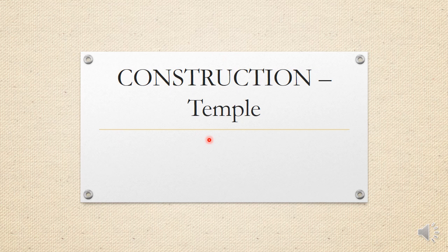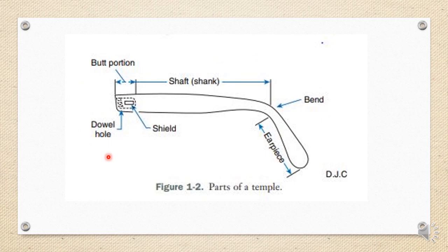Now let's cover temple construction types. The temple has a double hole where the screw attaches with the barrel holes of the frame front. The metallic shield or pin is attached to the temple to hold it in place. The complete area is called the butt portion; the length from the butt portion to the bend is the shaft; and from the bend to the end is the earpiece.